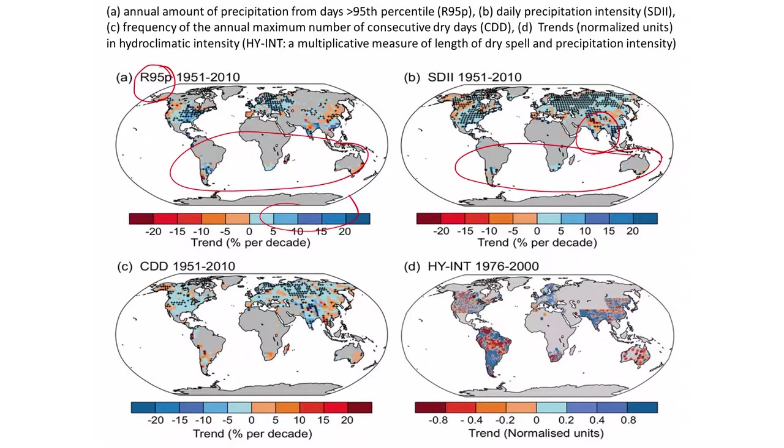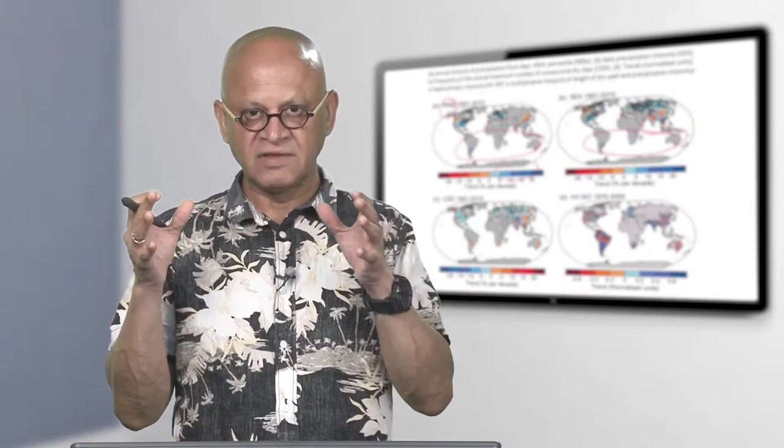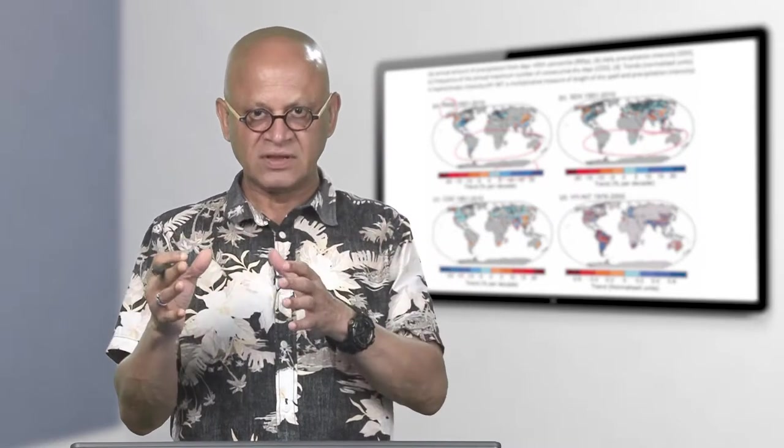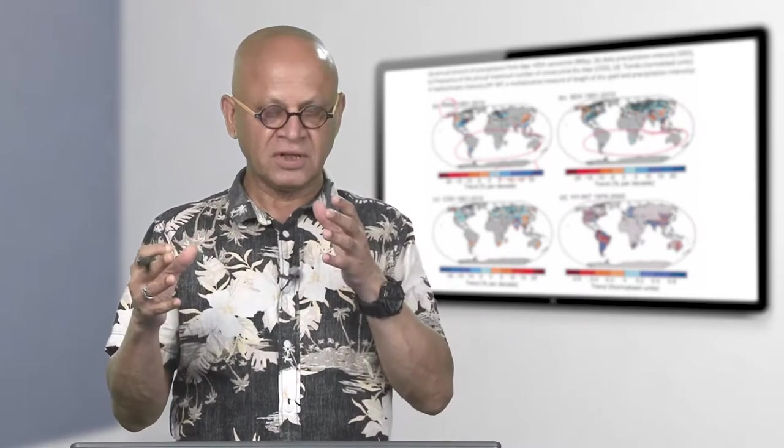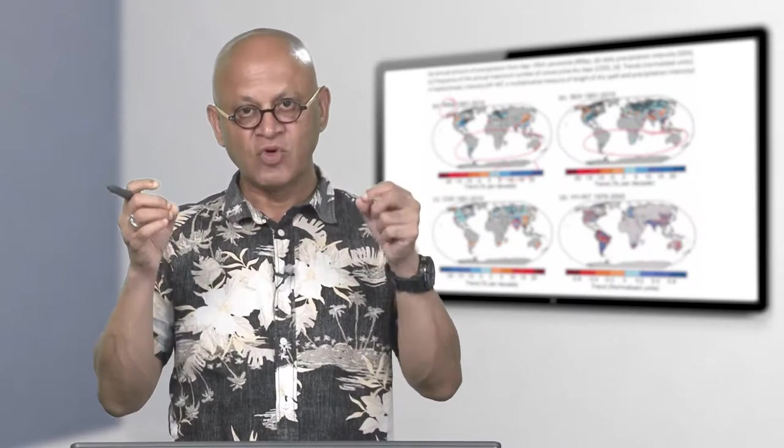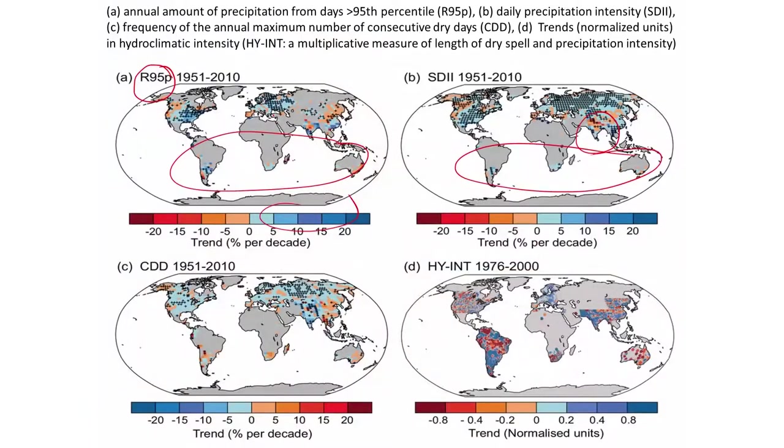That also is showing changes. Wherever you have these plus signs there you do something called a statistical significance test. If you are seeing a change, is the change statistically significant. It is a technical term. That means you can say with a confidence of more than 90 percent or 95 percent that this change is real. Not every change is real. You can see that the change is shown as a map but the statistical significant is valid only in certain places. That is something also to be kept in mind.